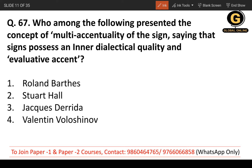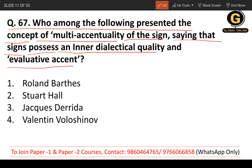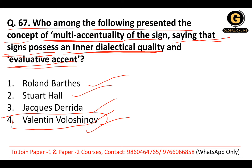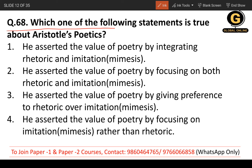Question 67: Who among the following presented the concept of multi-accentuality of the sign, saying that signs possess an inner dialectical quality and evaluative accent? Whether it is Roland Barthes, Stuart Hall, Jacques Derrida, or Valentin Voloshinov — the correct answer is Valentin Voloshinov.